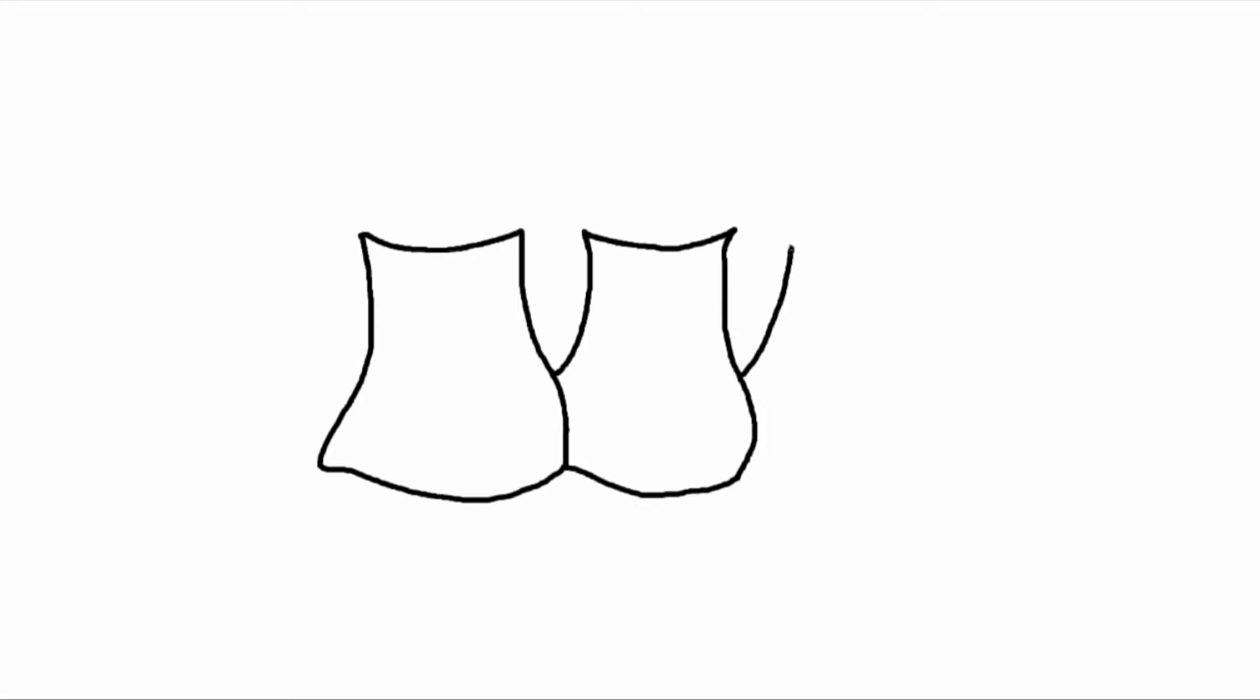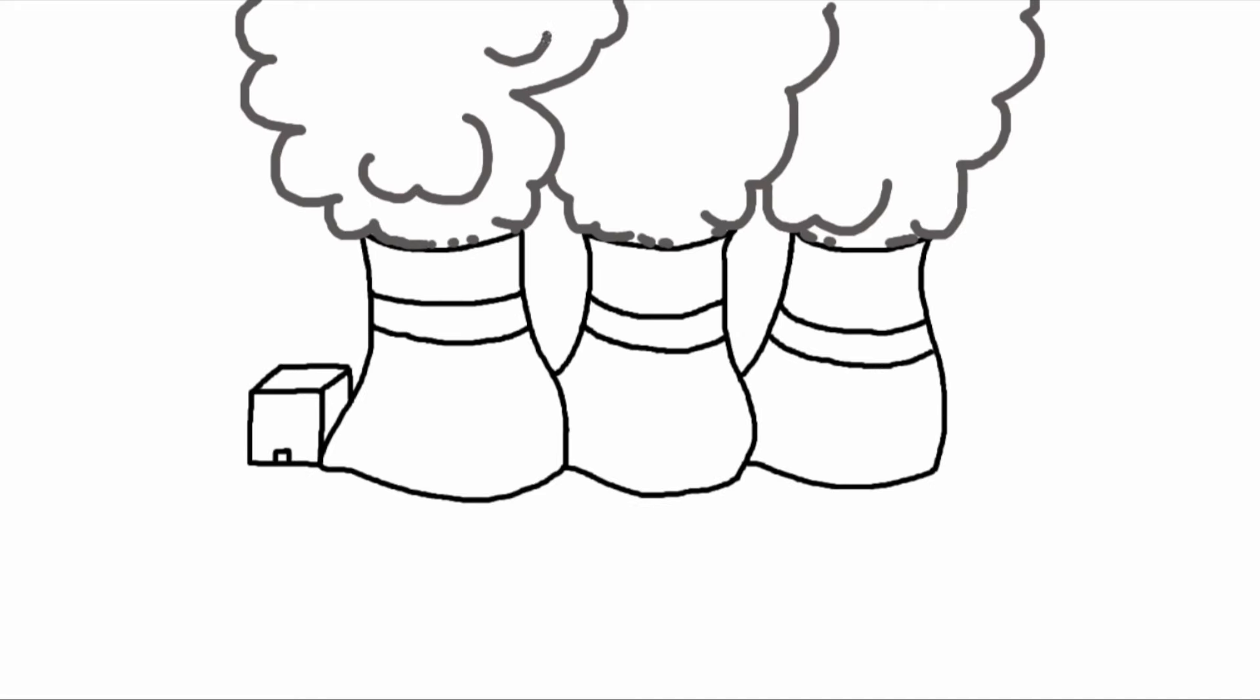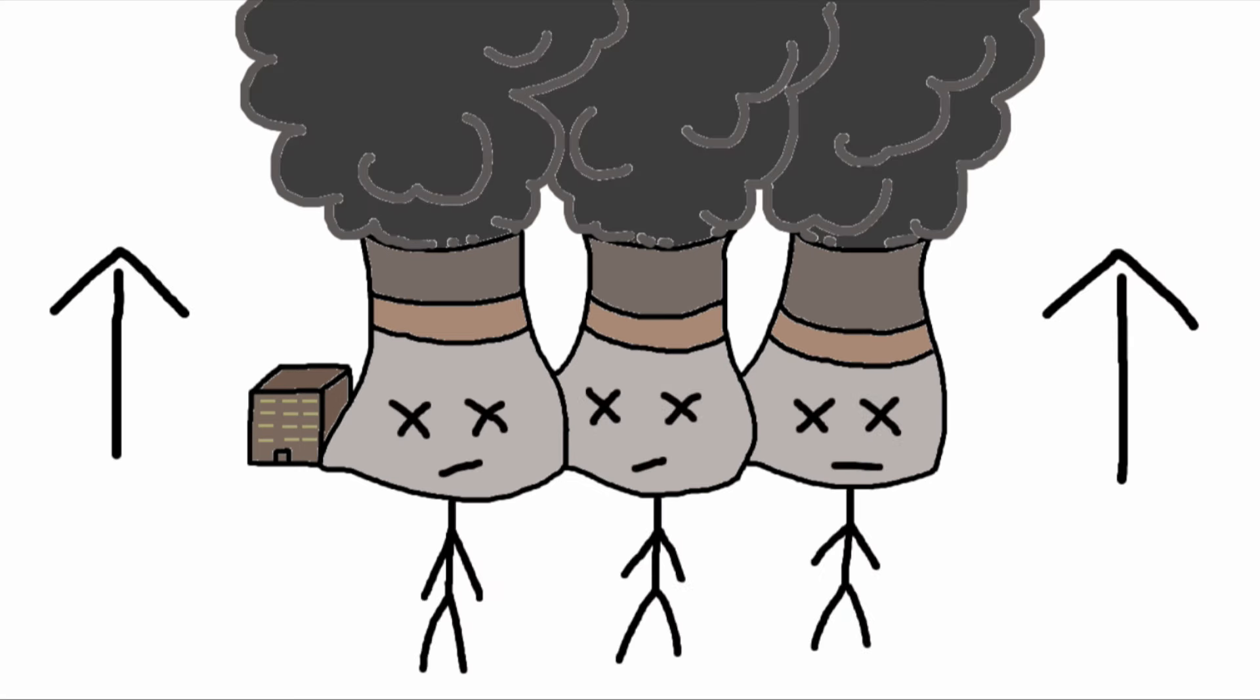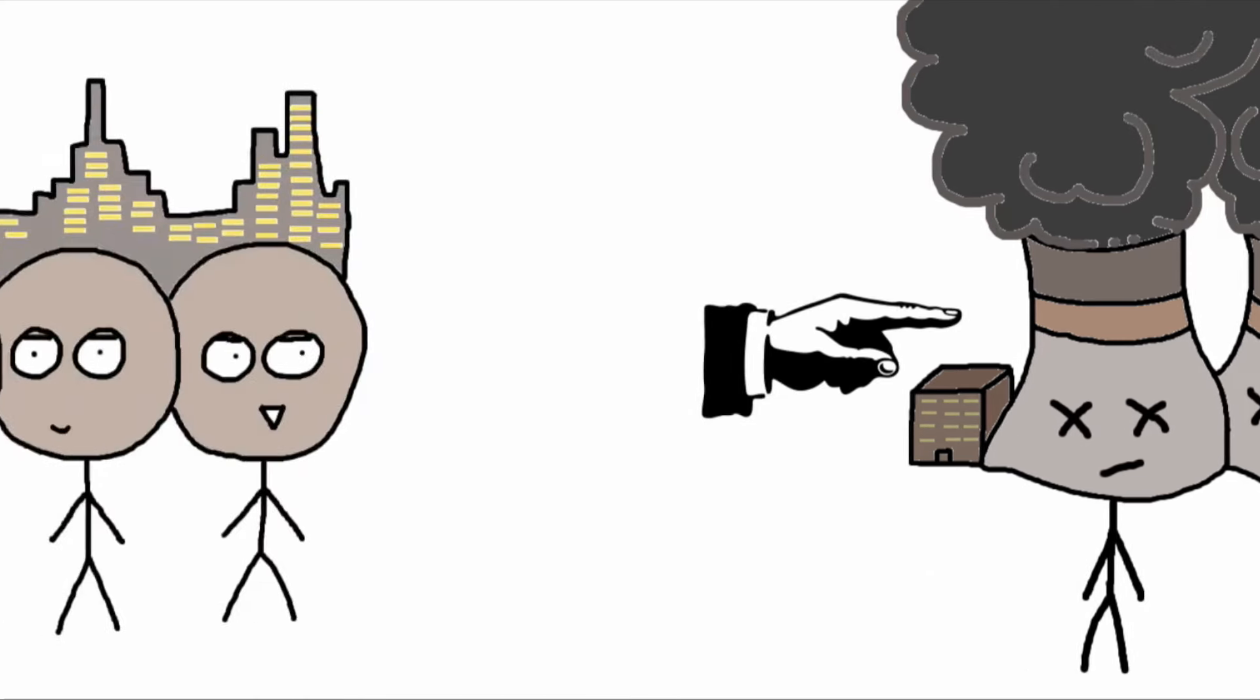Cheap and plentiful coal was more efficiently operated through one large centralized power plant rather than many small ones. So coal plants were scaled up in size, and due to the toxic health impacts of burning coal, pushed outside city limits.